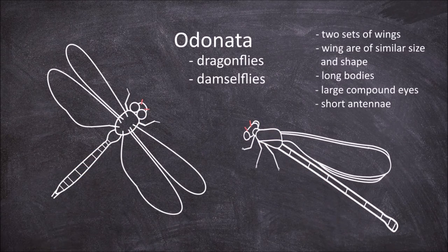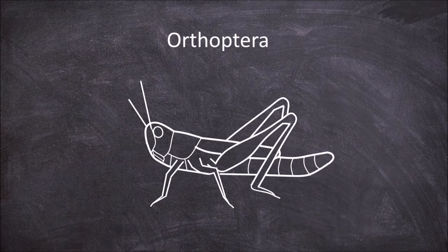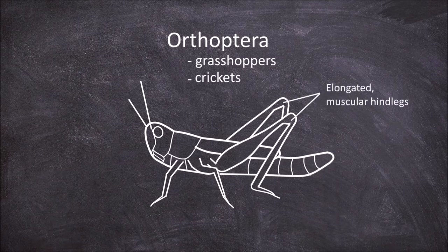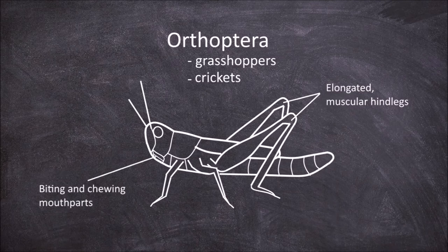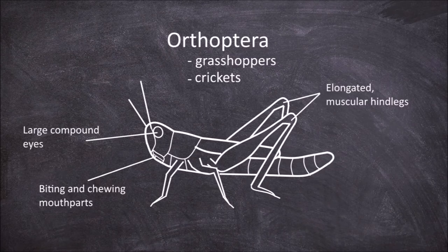The next order is the Orthoptera, which are the grasshoppers and crickets. Members of the Orthoptera characteristically possess a set of elongated and muscular hind legs specialized for jumping. They also have mouthparts designed for biting and chewing, in addition to possessing large compound eyes.